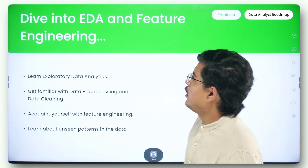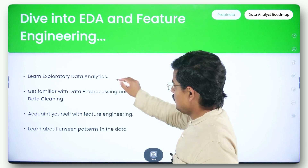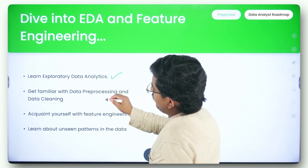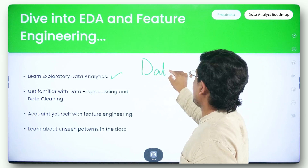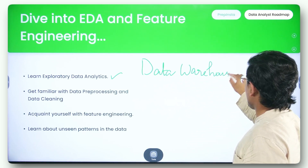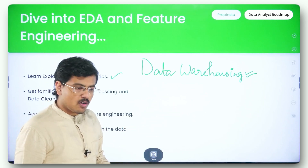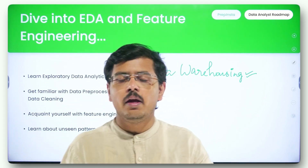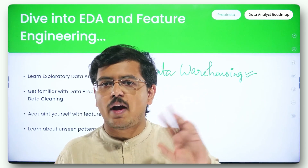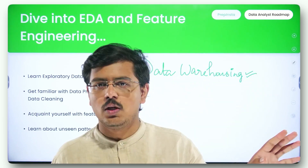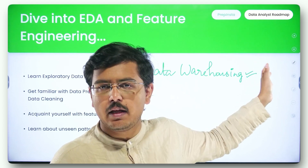Once you're done with Excel, dive into EDA and feature engineering. EDA is exploratory data analysis. Learn exploratory data analysis, data preprocessing, and data cleaning. Also, do not miss one very important phenomenon: data warehousing. A lot of freshers aren't aware of data warehousing — learn about it. This whole roadmap I'm giving you is fully integrated with industry. I'm not giving you fancy things just to build cool college projects — at the end of the day, you should land a good job if you're preparing using this roadmap.